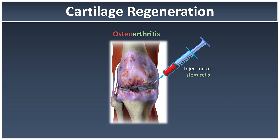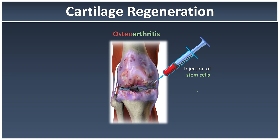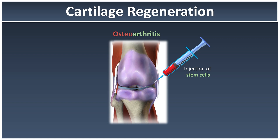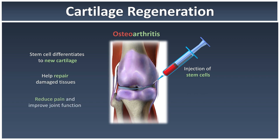Injecting stem cells into damaged cartilage is like sending a student to medical school — the student eventually becomes a doctor. Similarly, the injected stem cells will differentiate to become new cartilage tissue. This helps repair the damaged tissue, reducing the patient's pain and improving joint function. This represents the bright side of mitosis.